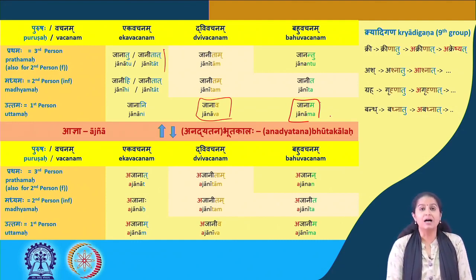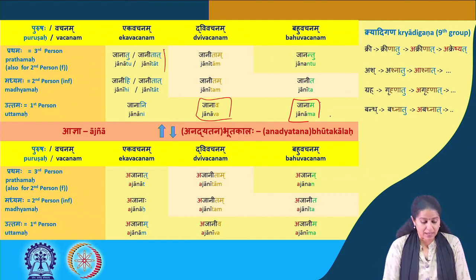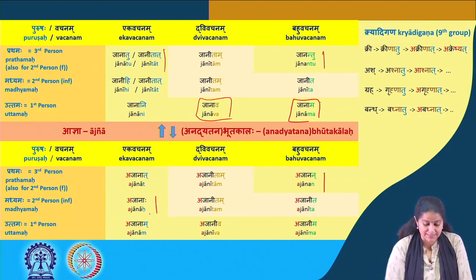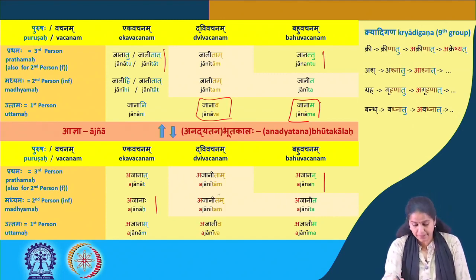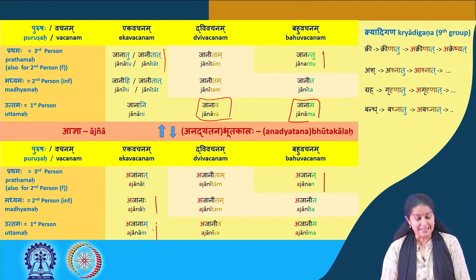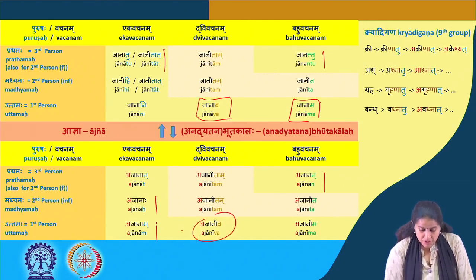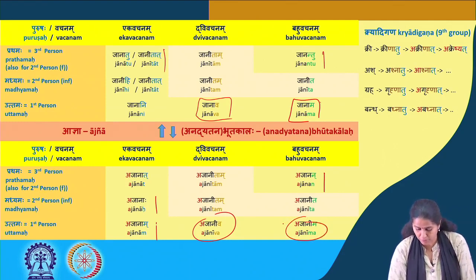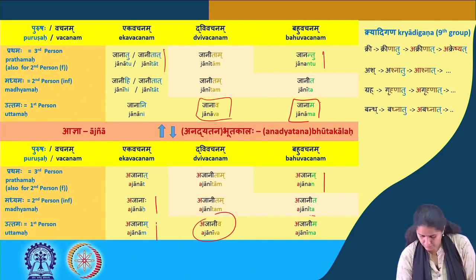And then we have jaanat as the verb form. Moving on to the bhuta kala, which is similar to the ajnya: ajaanat, ajaanitam, ajaanan; ajaanaha — so jaanihi becomes ajaanaha, a little different there — then ajaanitam, ajaanita; ajaanam — so jaanani becomes ajaanam. Then ajaaniva. Generally we find a reflection of the lot in the lung or ajnya in the bhuta kala, but here there is a little difference, similarly for vayam: jaanima.